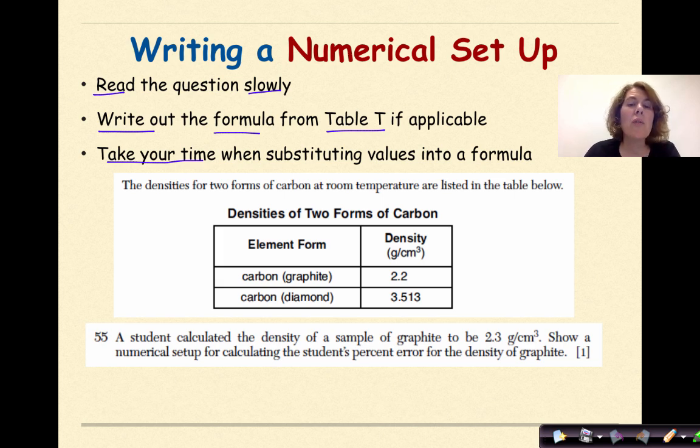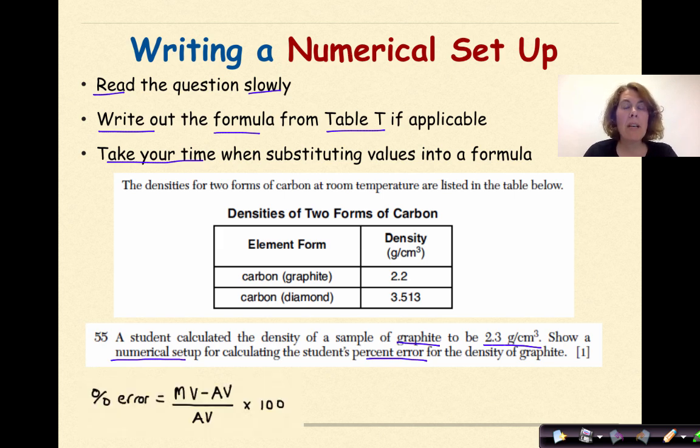The densities of two forms of carbon at room temperature are listed in the table below. So we have densities of graphite and diamond. A student calculated the density of a sample of graphite to be 2.3 grams per centimeter cubed. Show a numerical setup for calculating the student's percent error for the density of graphite. So the first thing that you should do is to go to your reference table and write out the formula for percent error. There it is, right there.